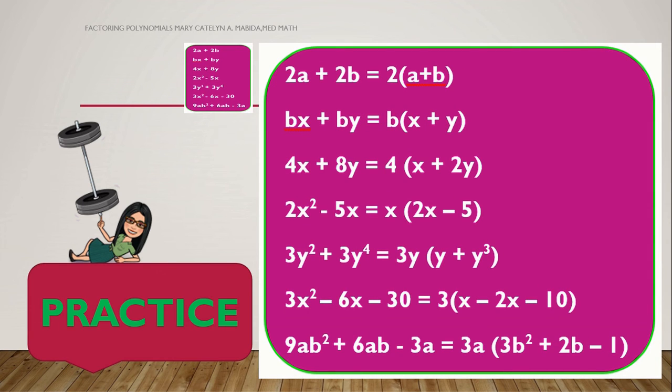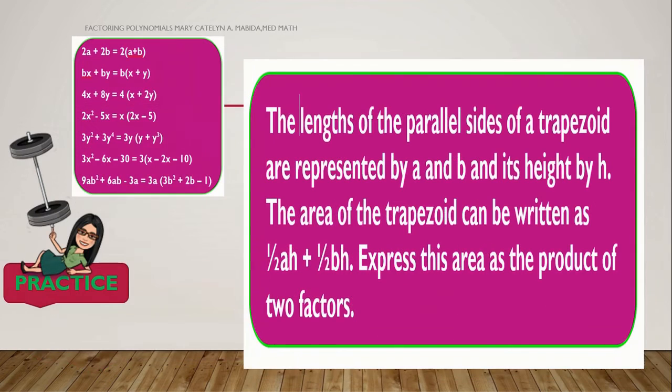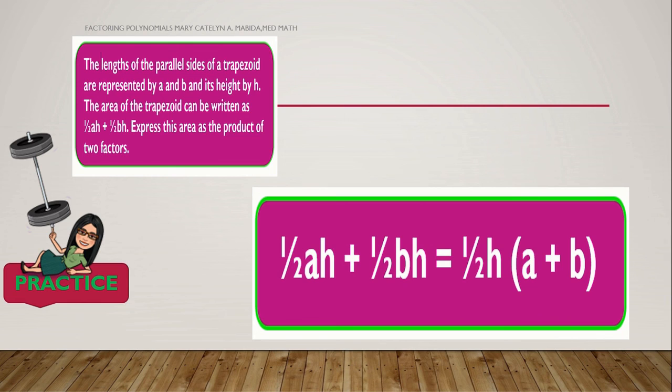What an amazing job! You got it! Now, let's try this one. The lengths of the parallel sides of a trapezoid are represented by A and B. And its height by H. The area of the trapezoid can be written as 1 half AH plus 1 half BH. Express this area as the product of two factors. Again, you can pause the video to answer. And that's it! The factored form is 1 half H times the quantity of A plus B.